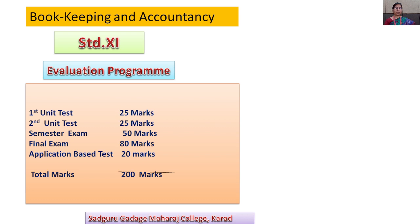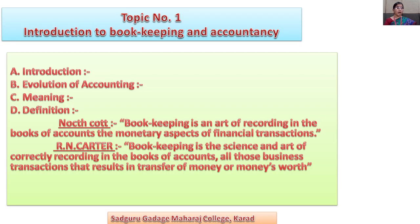Total marks is 200 marks. Let us see the first chapter: introduction to bookkeeping and accountancy. Bookkeeping is related with the recording of business transactions. Business organizations deal in activities which involve exchange of money or money's worth. All these activities are recorded in books of accounts for the purpose of taking important decisions. After recording financial transactions, an organization comes to know the net sales, net profit or net loss.